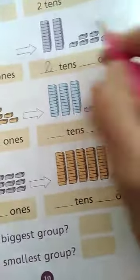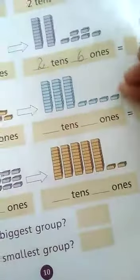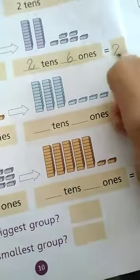we have 2 tens and 1, 2, 3, 4, 5, 6... 6 ones. So 2 tens and 6 ones is equal to 26. Okay.